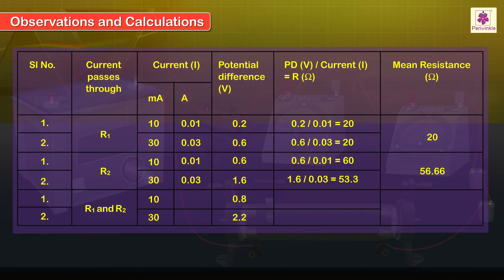Observations and Calculations: For a potential difference of 0.8 volts, a current of 10 mA (0.01 A) flows through the circuit. For a potential difference of 2.2 volts, a current of 30 mA (0.03 A) flows. Calculate the equivalent resistance of the two resistors in series. For the first set of readings, RS equals 0.8 divided by 0.01, which is 80 ohms.